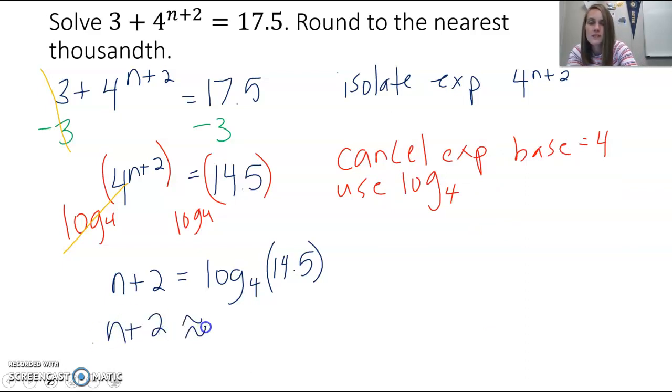N plus 2 is approximately 1.929, and then we finish by solving for n. We need to get rid of that plus 2, so we subtract 2 from both sides. If we take 1.929 and subtract 2, we're left with negative 0.071. Negative 0.071 would be our answer there.